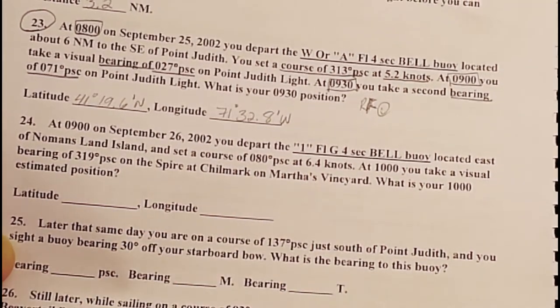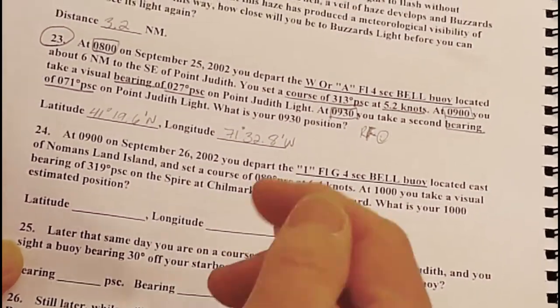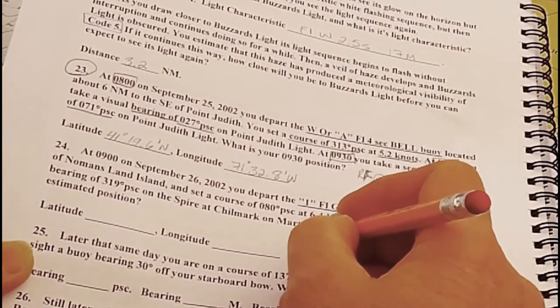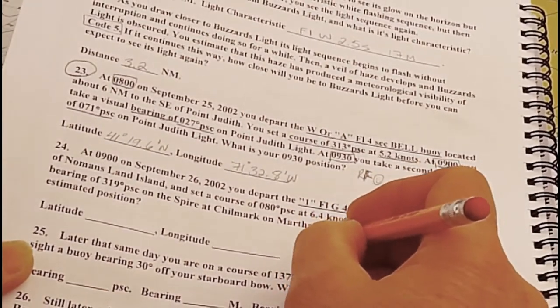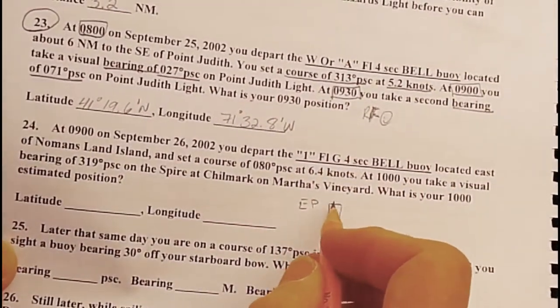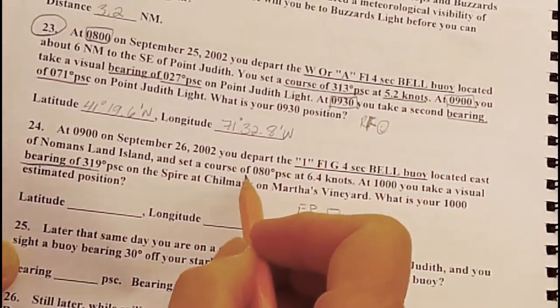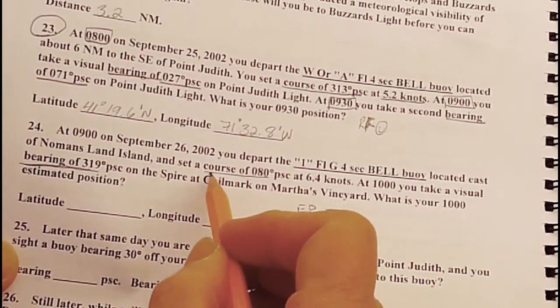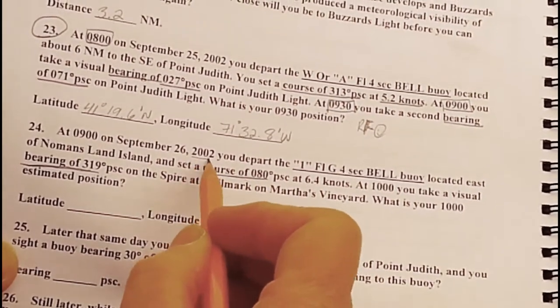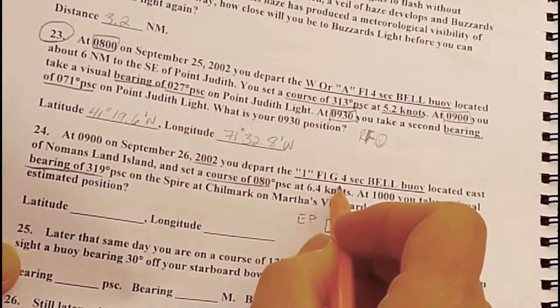At 10 o'clock, which is one hour later, you take a visual bearing of 319 degrees per ship's compass on the spire at Chilmark on Martha's Vineyard. What is your 10 o'clock estimated position? EP square.